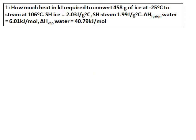Now let's do a question based on all these phase transitions and see what happens when we change ice to steam. The question is: how much heat in kilojoules is required to convert 458 grams of ice at negative 25 degrees Celsius to steam at 106 degrees Celsius? The specific heat of ice and steam are given. The specific heat of water is 4.18. Delta H fusion and delta H vaporization of water are also given.